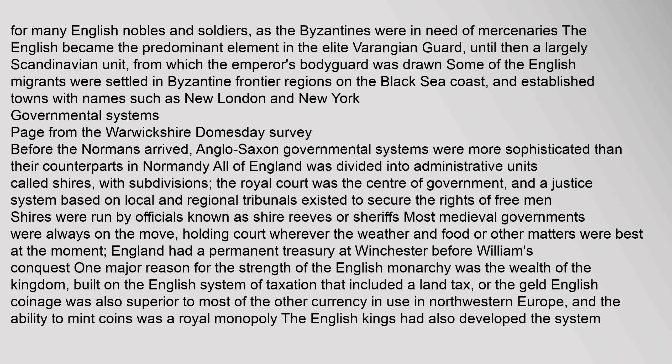Before the Normans arrived, Anglo-Saxon governmental systems were more sophisticated than their counterparts in Normandy. All of England was divided into administrative units called shires, with subdivisions; the royal court was the centre of government, and a justice system based on local and regional tribunals existed to secure the rights of free men. Shires were run by officials known as Shire Reeves or Sheriffs. England had a permanent treasury at Winchester before William's conquest. One major reason for the strength of the English monarchy was the wealth of the kingdom, built on the English system of taxation that included a land tax or the Geld. English coinage was also superior to most of the other currency in use in northwestern Europe, and the ability to mint coins was a royal monopoly.